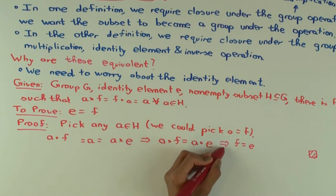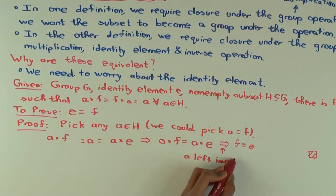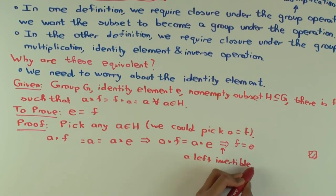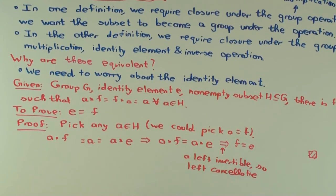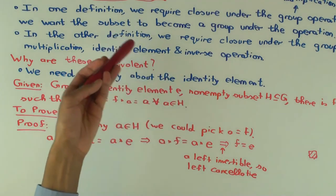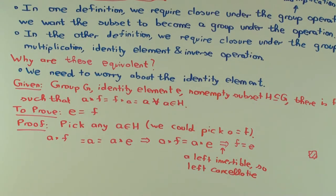We used the fact that A is left cancellative because A is left invertible — because we're in a group. So we've shown that the identity element is the same even if we don't insist on it; it follows automatically in the group situation. And once the identity element is the same, since the inverse operation is unique, any inverse within the subset must be the same as the inverse in the whole group. So inverses are not a problem.